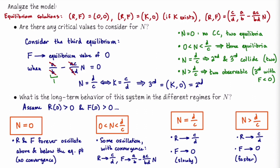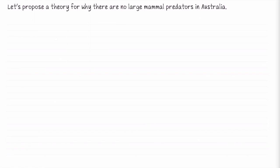The message is: for the fox population to survive when there's a carrying capacity on rabbits, we need n between 0 and d/c, meaning the carrying capacity must be larger than c/d. Let's use this idea to suggest a theory explaining why there are no large mammal predators in Australia. Most other continents have large predators; Australia doesn't — the largest may be a dingo. Different theories exist, including that humans hunted them to extinction, but our model suggests another reason.